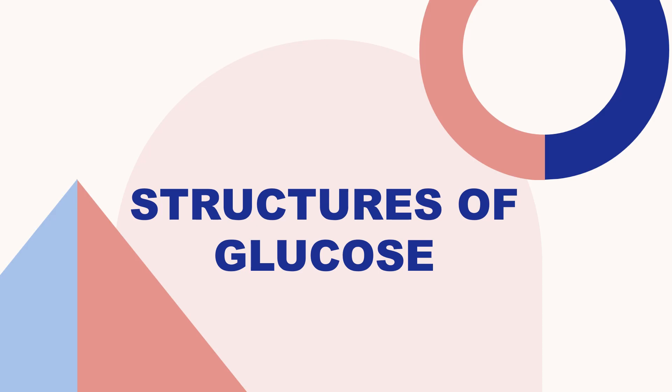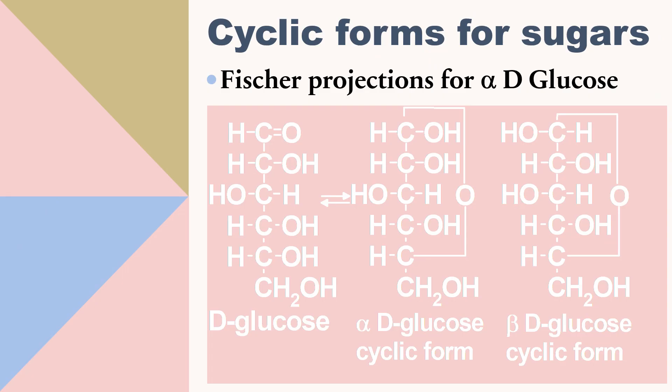Structure of glucose. There are different cyclic forms for sugars. In the Fischer projection for alpha D-glucose, we can see the picture over here. This is D-glucose and alpha D-glucose. This is the cyclic form, and beta D-glucose cyclic form.